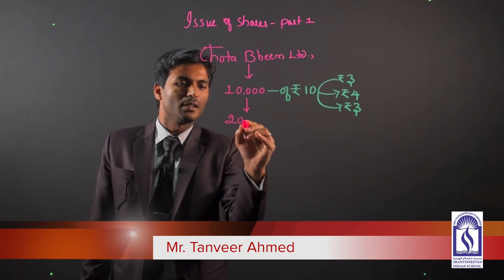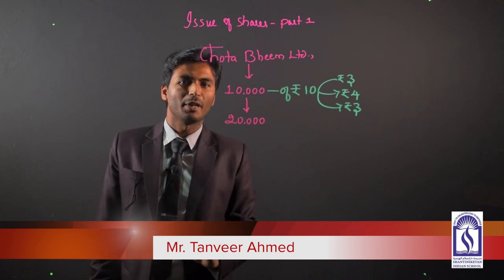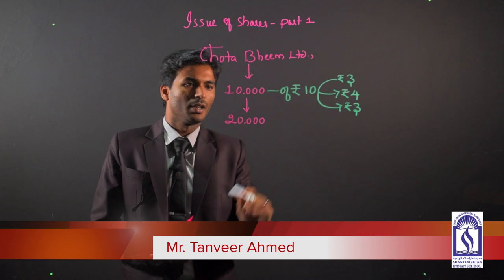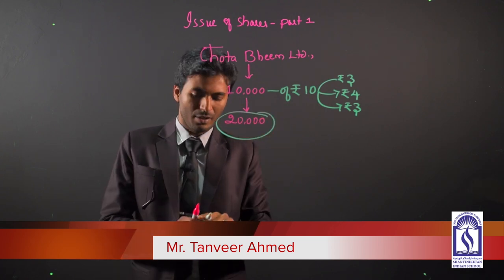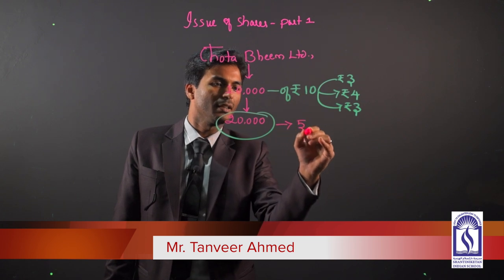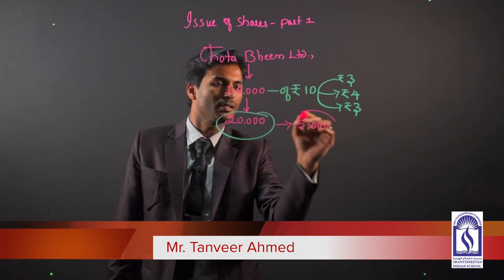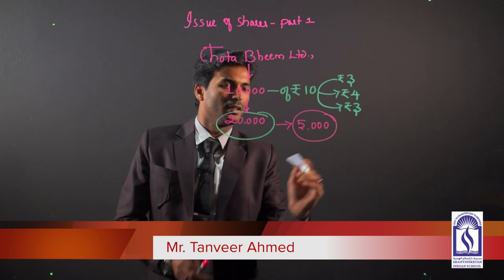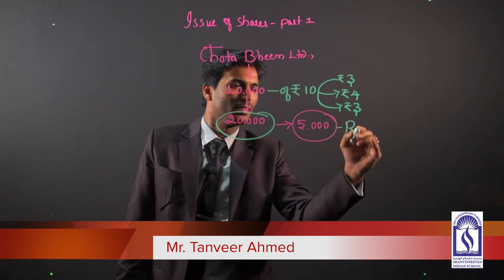Suppose the company has a good reputation and 20,000 applications have been received. Due to the excess application, the company cannot allot everyone, so the company has decided to send the letters of regret, that is rejection for these shares.